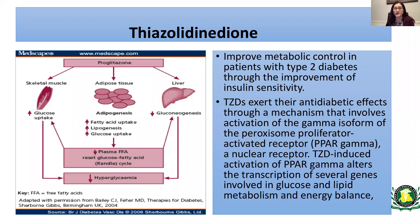The next class is thiazolidinediones, or TZDs, which were very popular in the early 2000s. However, several agents were taken off the market due to side effects, especially fluid retention and heart failure. This class is now used in a select group of patients with high insulin resistance where fluid retention is not an issue. TZDs improve metabolic control through improvement of insulin sensitivity via PPAR-gamma, a nuclear receptor, which alters transcription of genes involved in glucose and lipid metabolism. TZDs mainly act at the tissue level, increasing fatty acid uptake, lipogenesis, and glucose uptake.